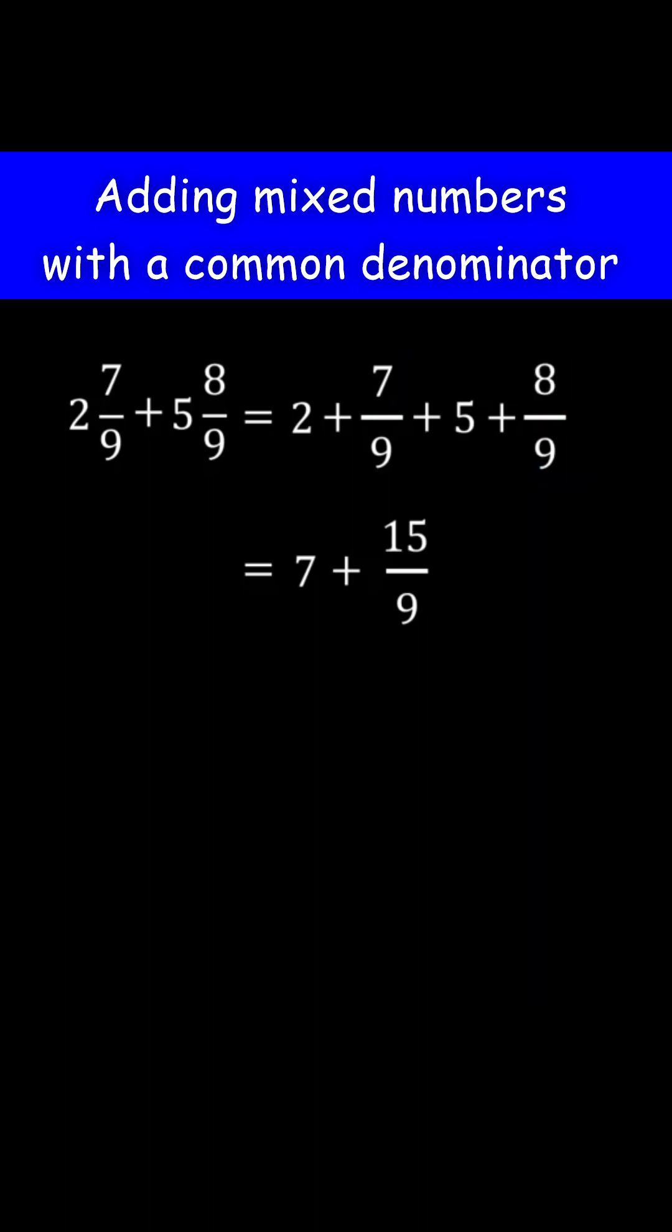Then simplify the fraction if possible. 15 can be factored as 3 times 5. 9 can be factored as 3 times 3. We can cancel the 3 and we will have 5 over 3.